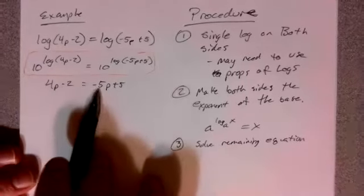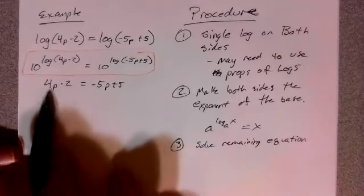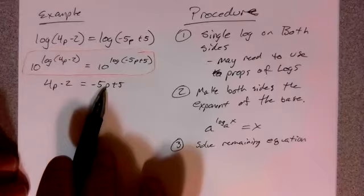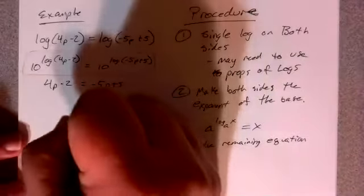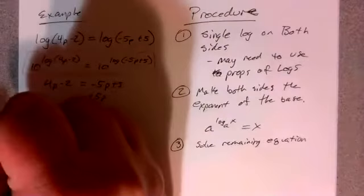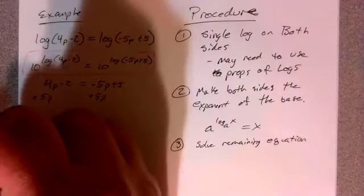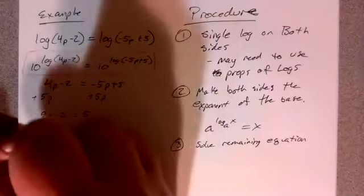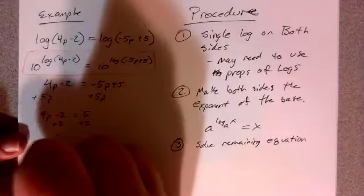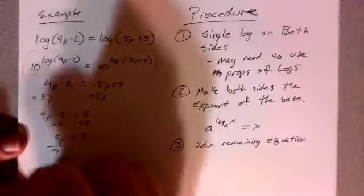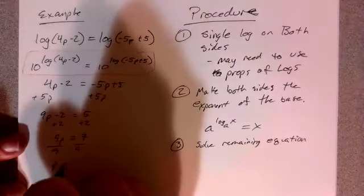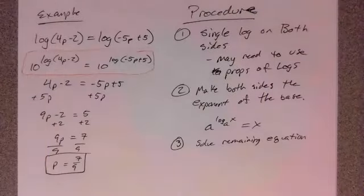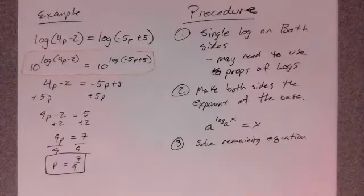Okay, 4p minus 2 equals negative 5p plus 5. My p's are all to the first power, so I'm going to get my p's on one side and my numbers on the other. Here I'm going to add 5p. So I get 9p minus 2 equals 5 plus 2. So 9p equals 7, divide by 9, and p equals 7 ninths. That's all I had to do there. And we're done.